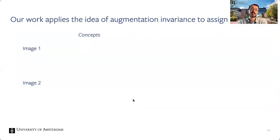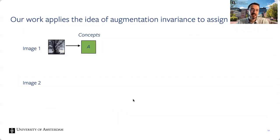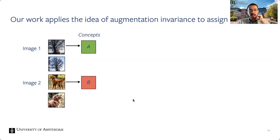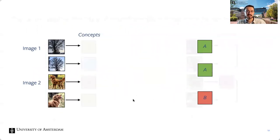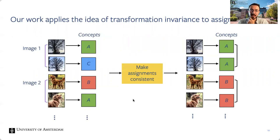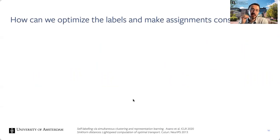The fact that the meaning of an image does not change with these augmentations means we can use this as a free learning signal to tell the computer to differentiate between what is important and what is not. This idea sits at the core of our work. The broad intuition: we start by assigning each image a label randomly, then transform the images and ask our model to predict which label the image belongs to. If it gets it wrong, we optimize the label assignments to be consistent under transformations.